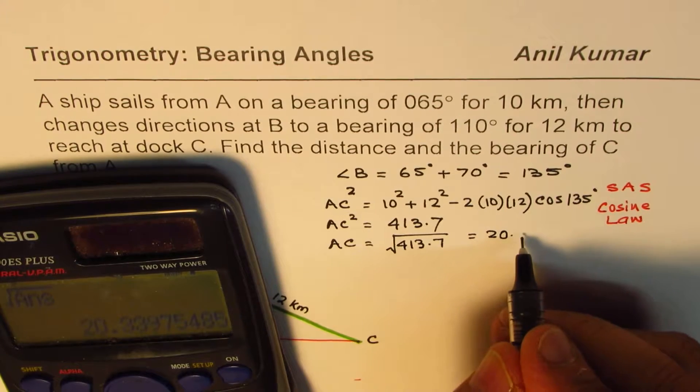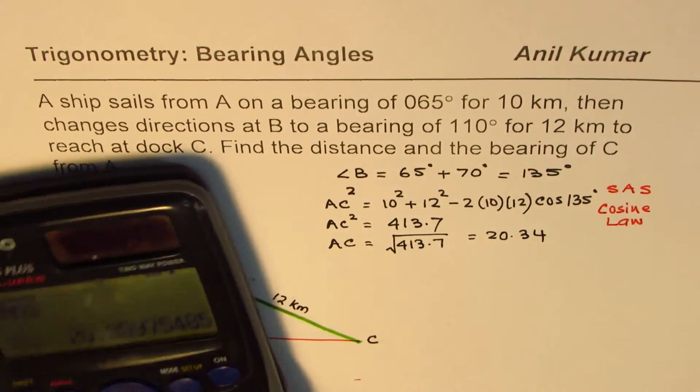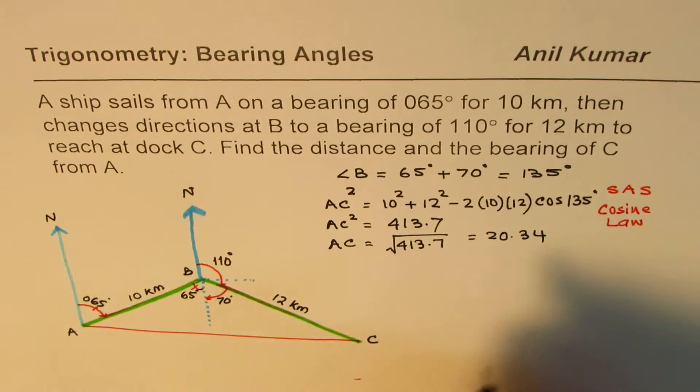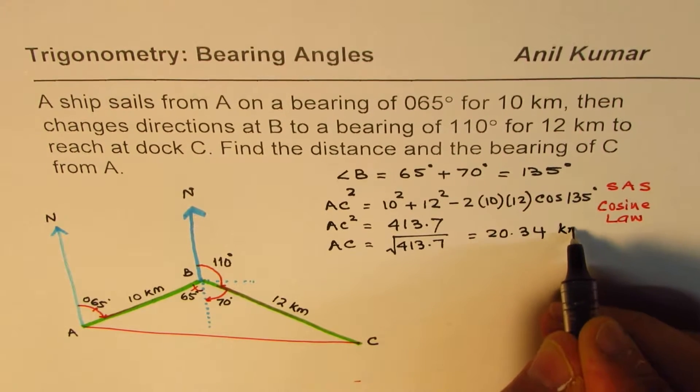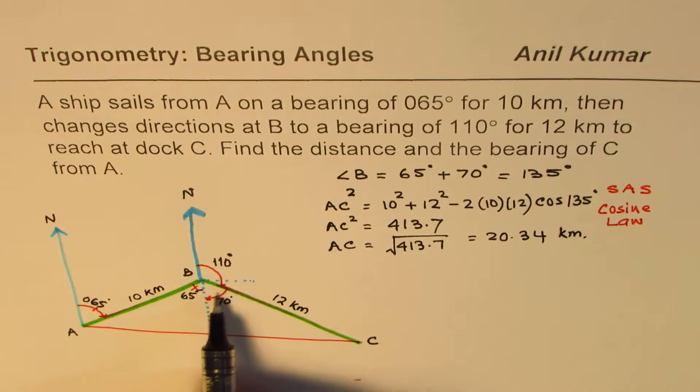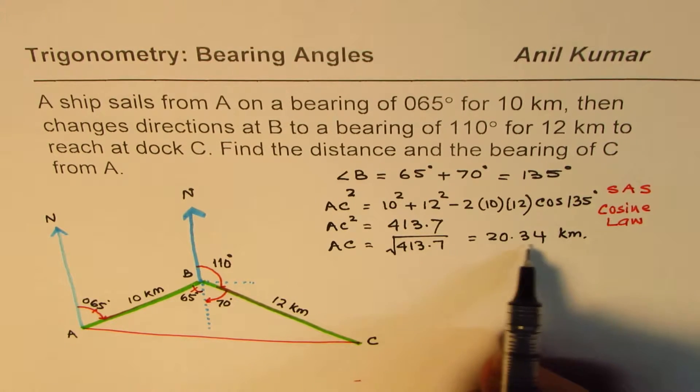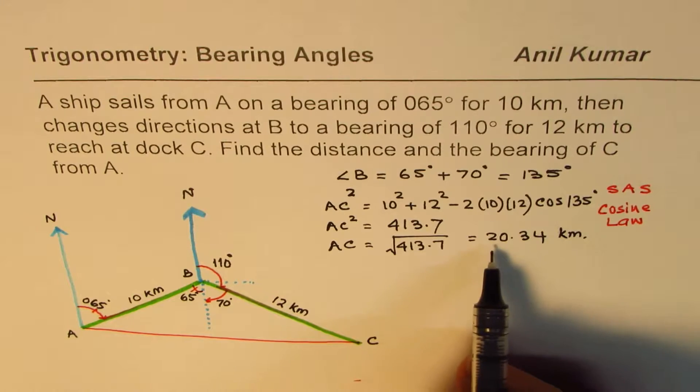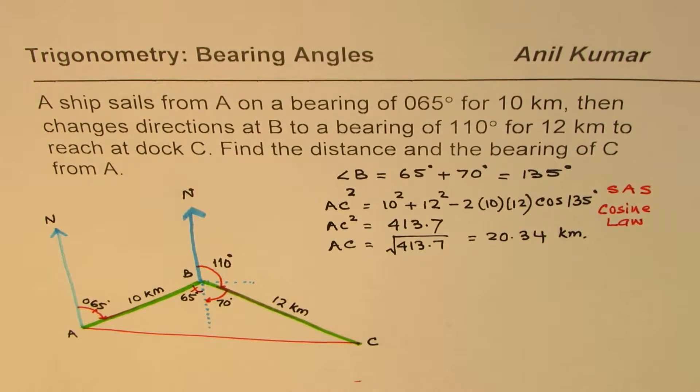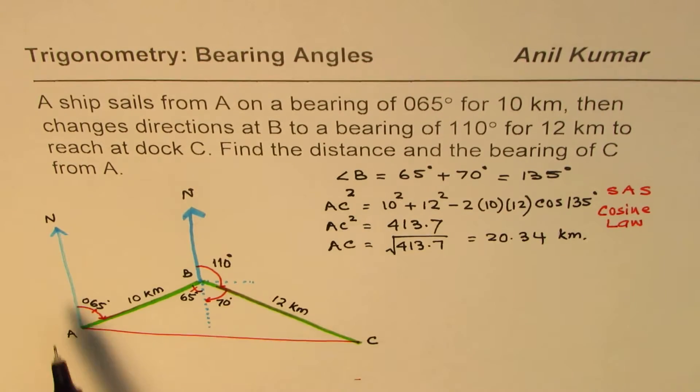Let's find square root of our answer and that is equal to 20.34 kilometers. As expected, this side is much longer than the other two since the angle included is 135 degrees, it's a big angle. So we know this side. So what we have done so far is we have found the distance between A and C.